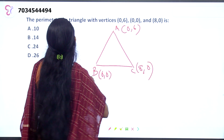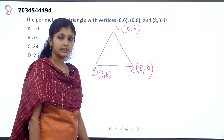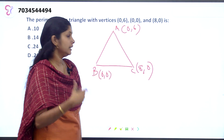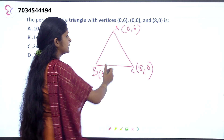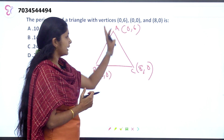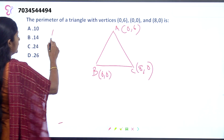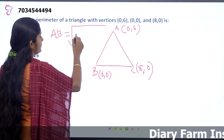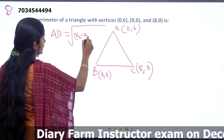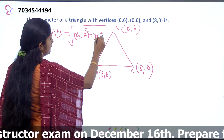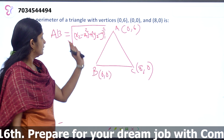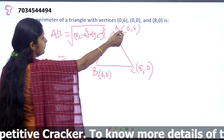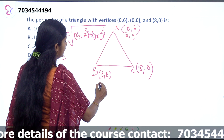To find the perimeter, we need the side lengths. We will use the distance formula: square root of (x2 minus x1) whole square plus (y2 minus y1) whole square. We substitute the coordinates for each pair of vertices.